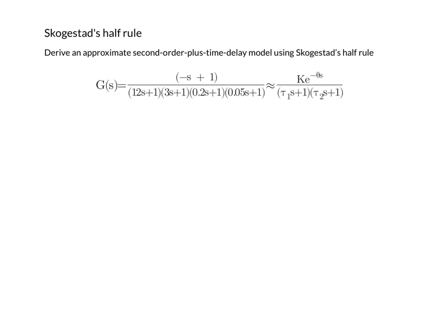So the given transfer function actually has a gain of 1, and we have to remember that there is a minus 1 time constant in the numerator as well.